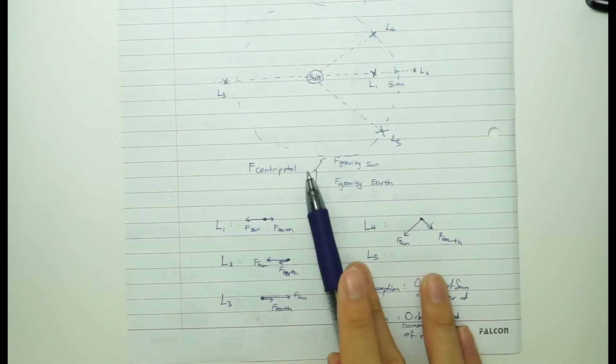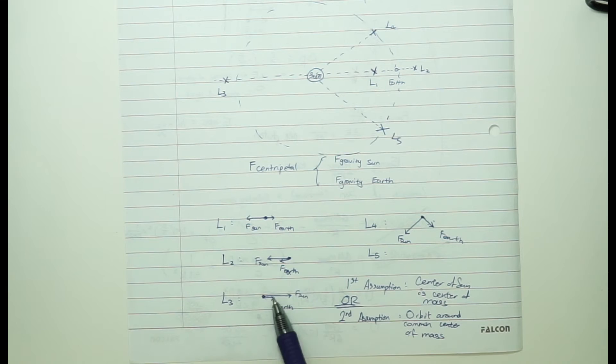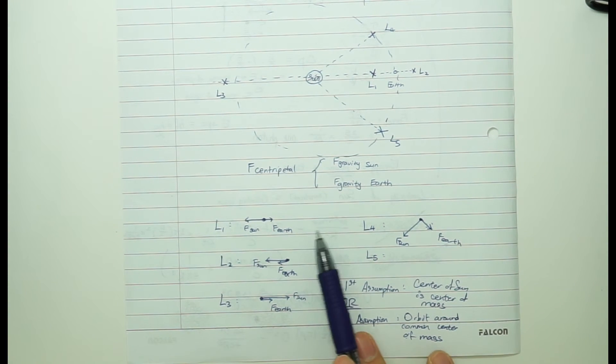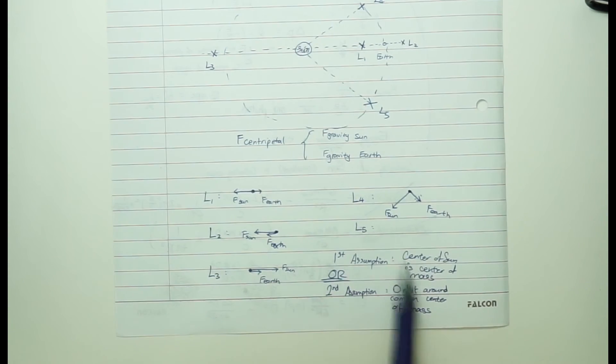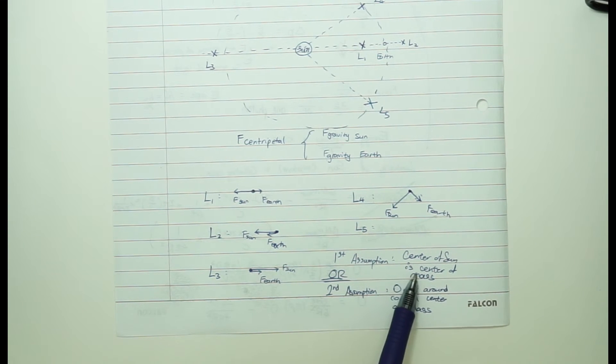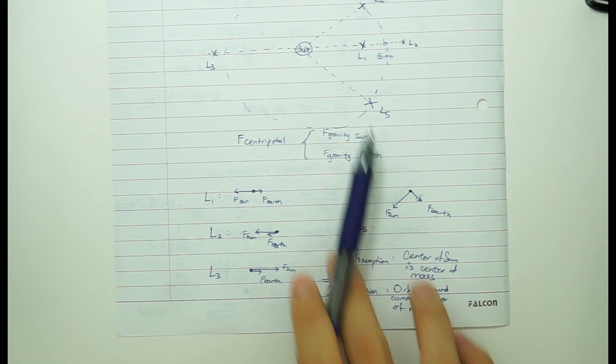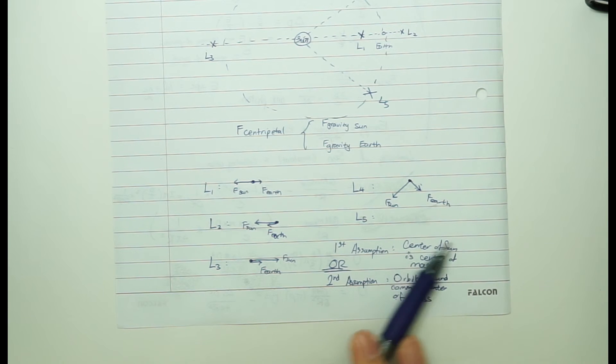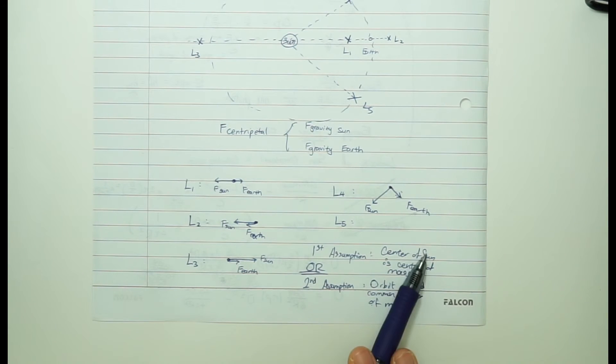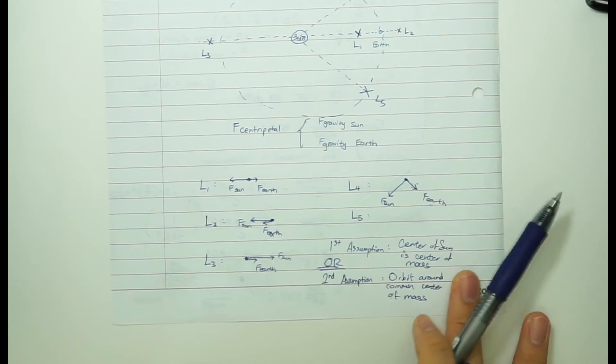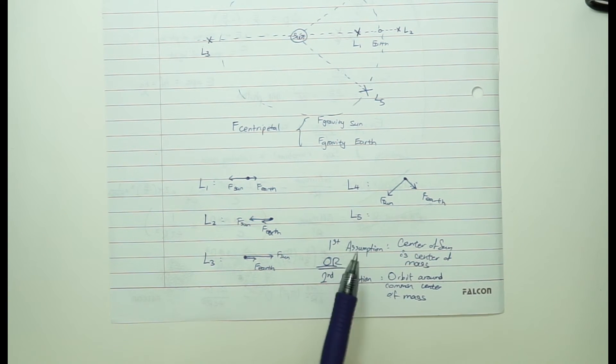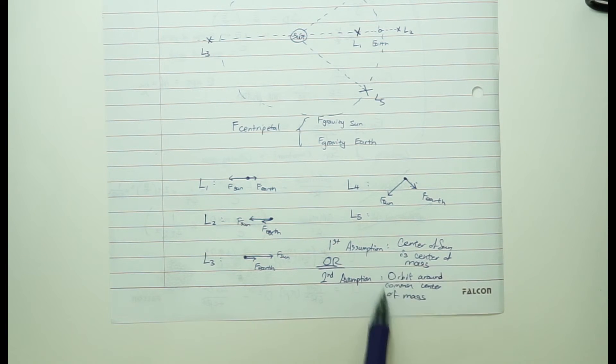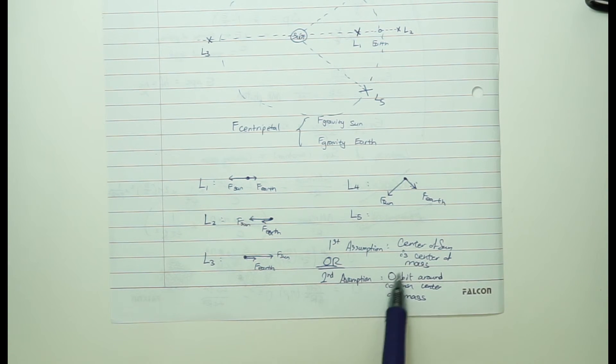However, one thing you notice is that these all have different configurations. However, the main assumption that you must make is that either the Sun is the center of the mass, so that would make your calculations a lot easier. Or you can say it orbits around the common center of mass. So this is only valid with small objects like large differences like the Sun and Earth. If you're doing like Sun and Jupiter, then you have to use this second assumption. They orbit around the common center of mass.